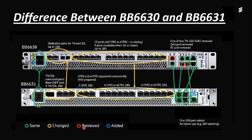To summarize the color coding used: the yellow color shows something that has changed, the red color shows something that has been removed — for example, TNC, SAU, and EC ports are removed in the 2631. The blue color shows what has been added — for example, USB is available in the 2631 but not in the 2630. That is the difference between baseband 2630 and 2631.